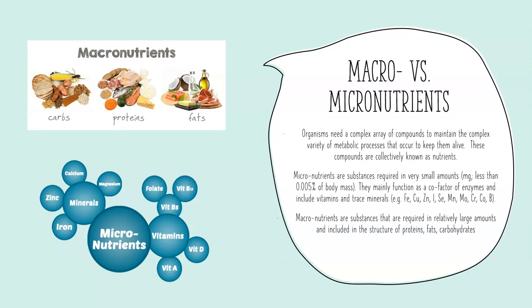Micronutrients are things we only need in very small amounts — milligrams, less than 0.05% of our body mass. These micronutrients often work as cofactors of enzymes and include vitamins and some trace minerals such as iron, copper, and zinc. These often form metal centers in enzymes with quaternary structures like hemoglobin, so we need small amounts of metal ions and various vitamins to work as coenzymes and cofactors for metabolic processes.